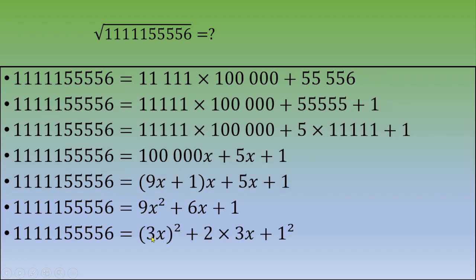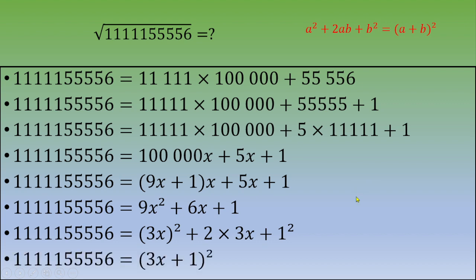We can rewrite nine x squared plus six x plus one as three x squared plus two times three x times one plus one squared. Using the remarkable identity a squared plus two ab plus b squared equals a plus b squared, we end up with three x plus one, squared.